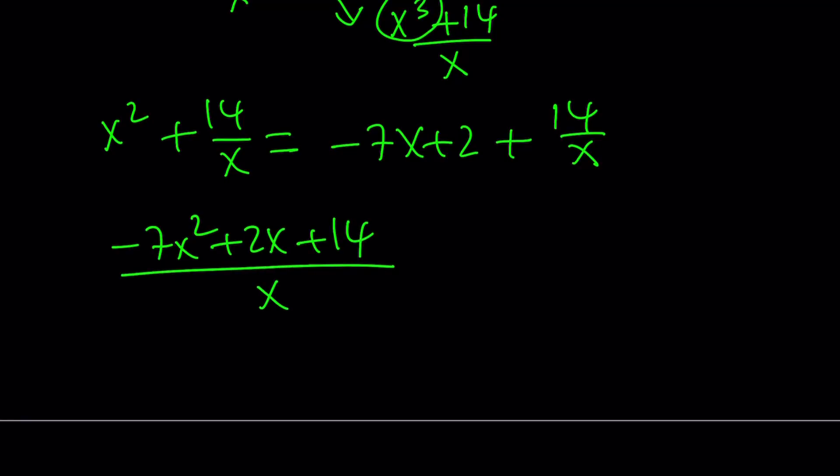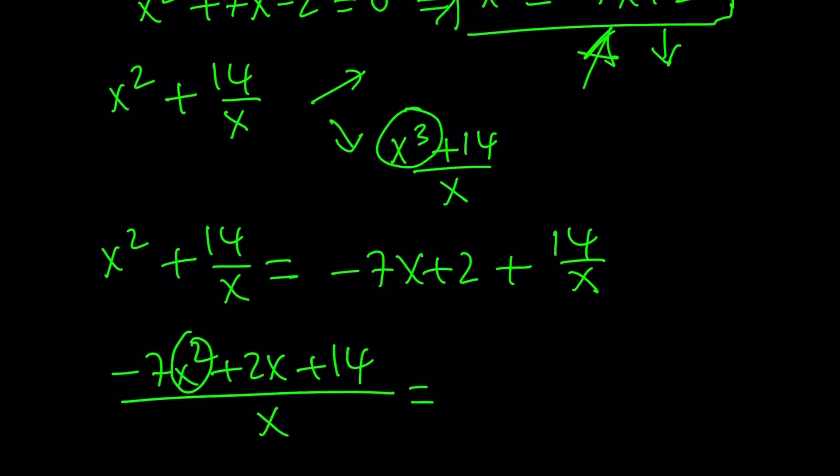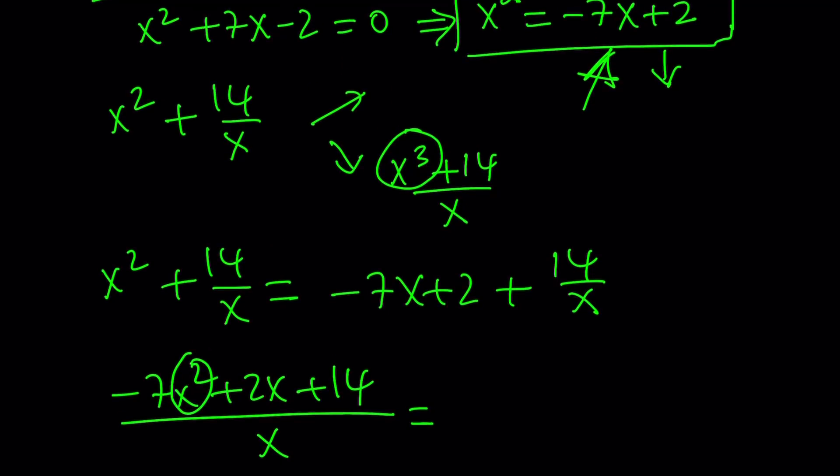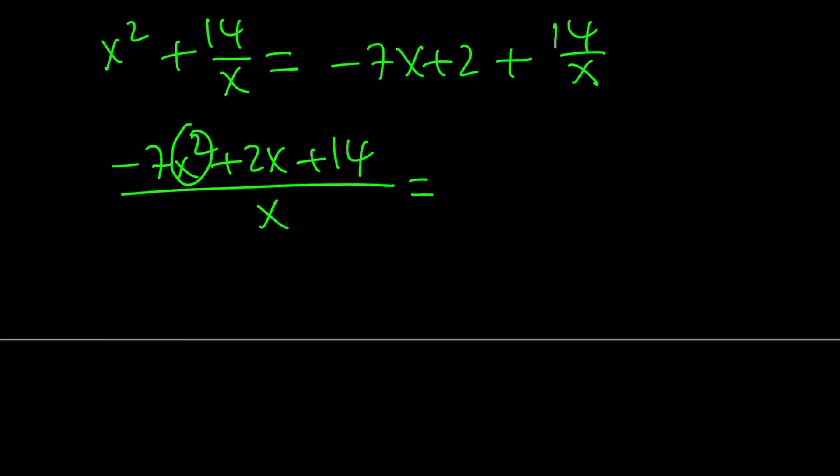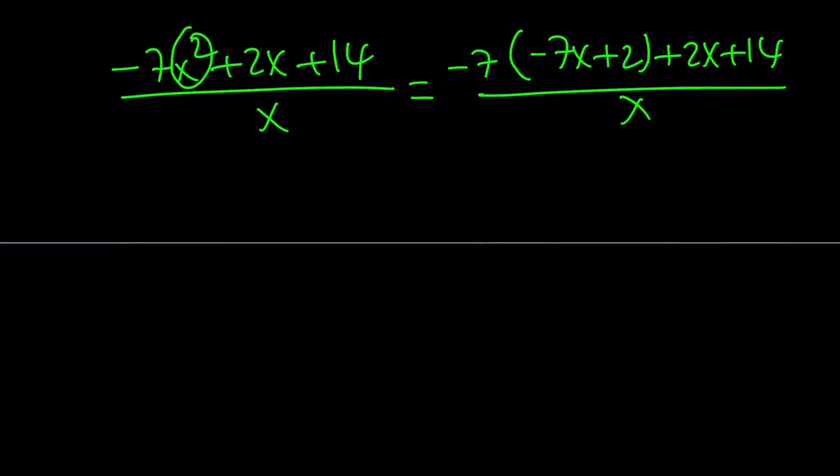Notice that I have a quadratic expression here. And let's go ahead and replace x squared with something again. So this method involves basically constant substitution of x squared. Now, replace x squared with negative 7x plus 2. And then you're going to continue with 2x plus 14. That is all divided by x. And then we have to distribute, right? I was going to say substitute, but distribute. 49x minus 14 plus 2x plus 14.